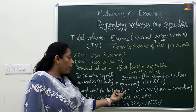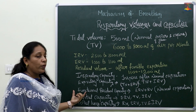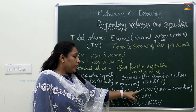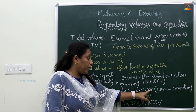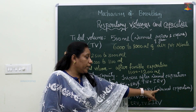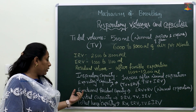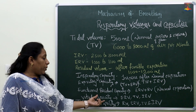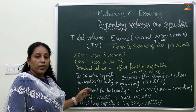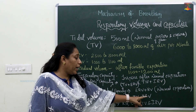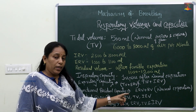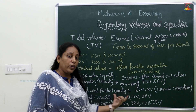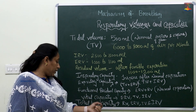Functional Residual Capacity is calculated as ERV plus Residual Volume — the volume remaining after normal expiration. Vital Capacity is a combination of ERV, TV, and IRV — expiratory, inspiratory, and tidal volumes combined together form the vital capacity.